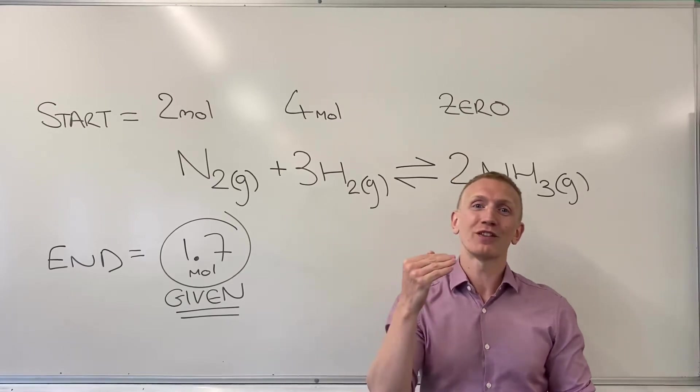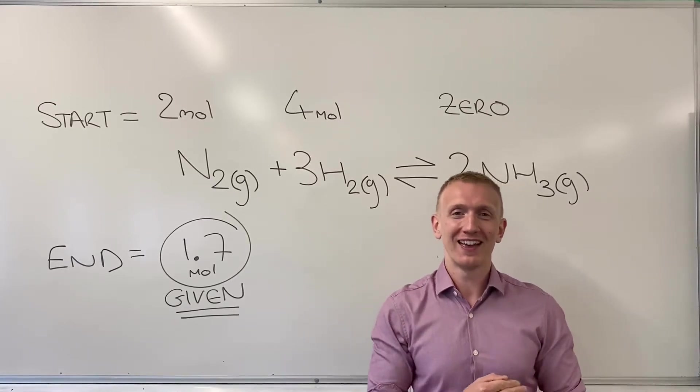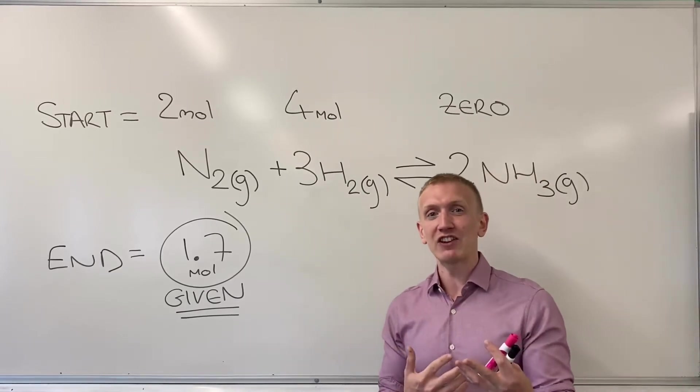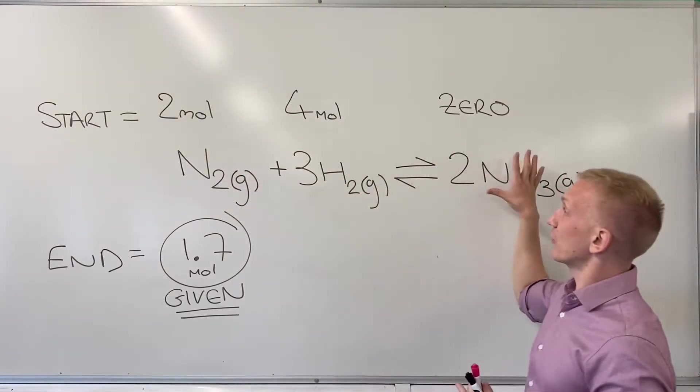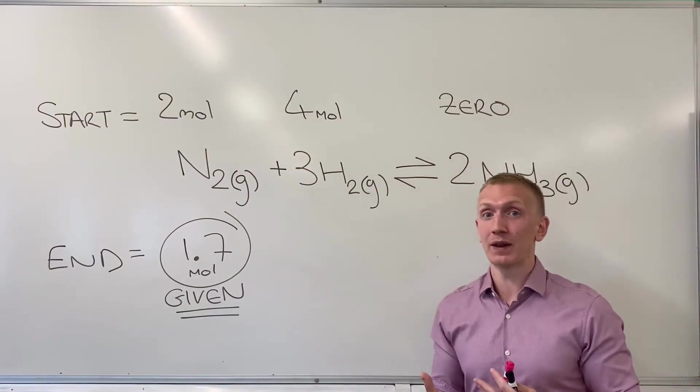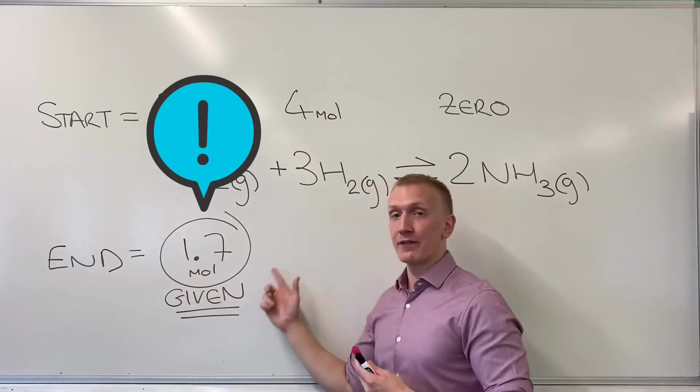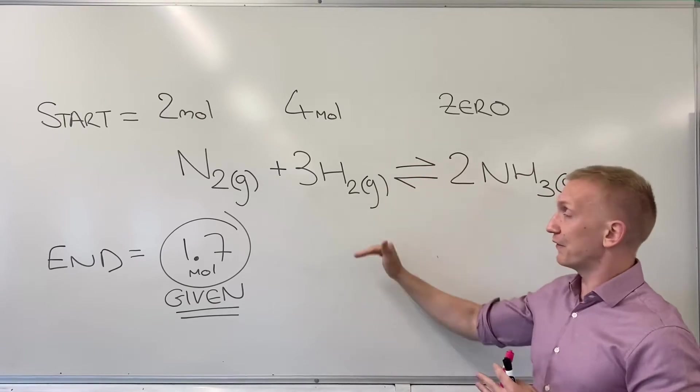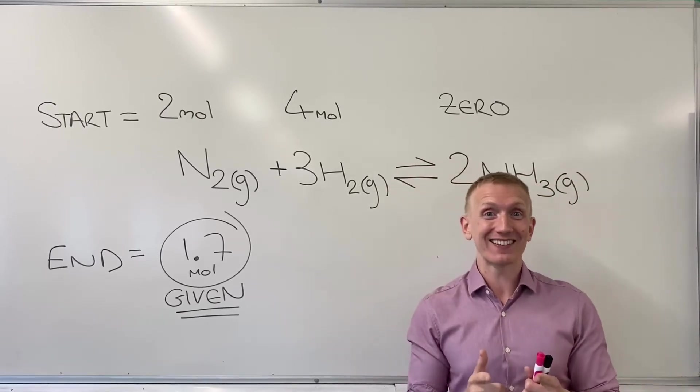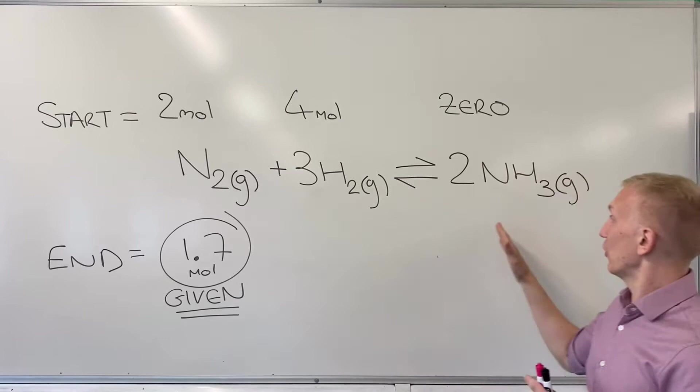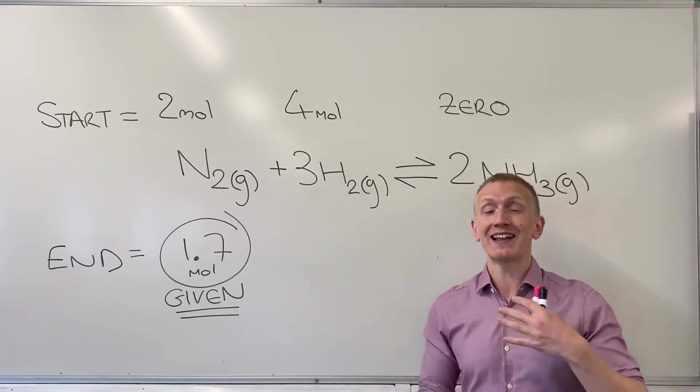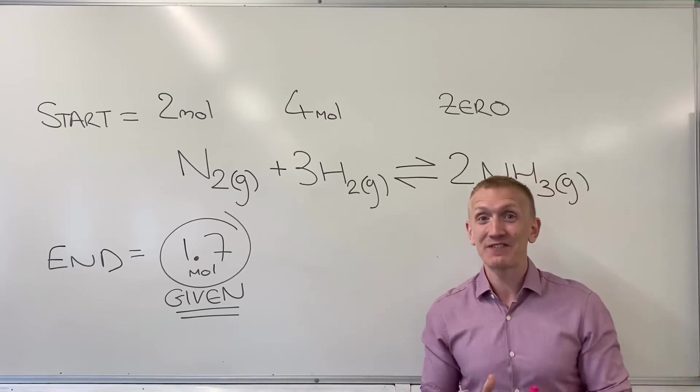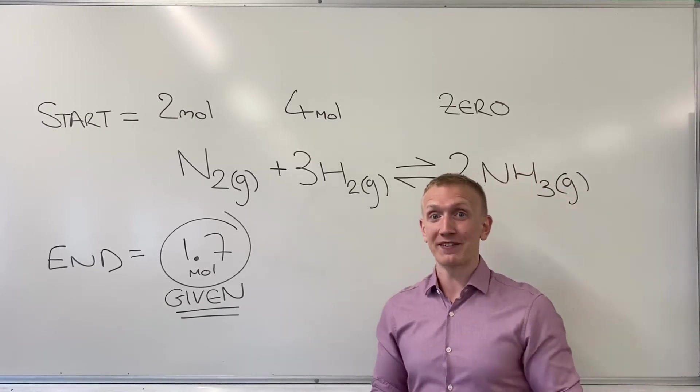In the exam at the start of a big Kc equilibrium calculation question they'll very often give you your starting mole values and the equilibrium and then they'll give you a piece of information like this one where they tell you one of the mole values after the equilibrium has been established. Your task then is to figure out what the other remaining mole values at equilibrium need to be so that then you can calculate Kc. It's a very common exam question for the OCR A specification.